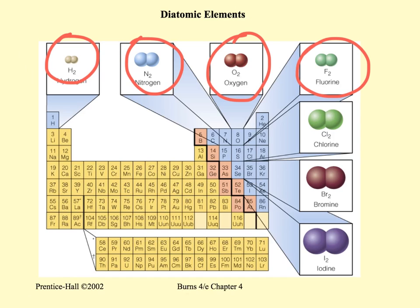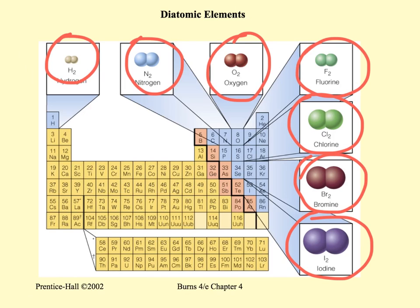So every time you write a formula or a reaction using any of these gases — hydrogen, nitrogen, oxygen, fluorine, chlorine, bromine, or iodine — you need to write it with a subscript 2. The symbol and a subscript 2.